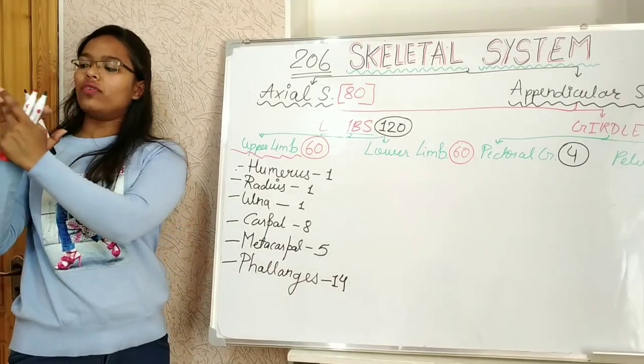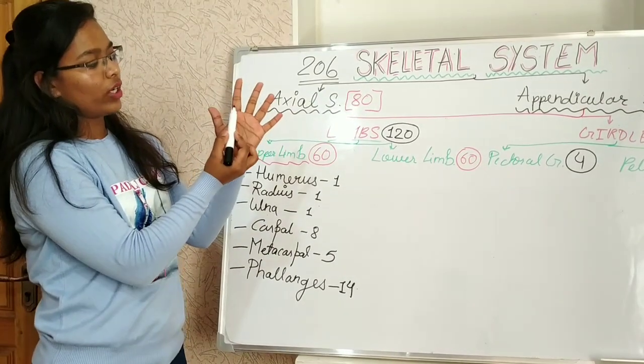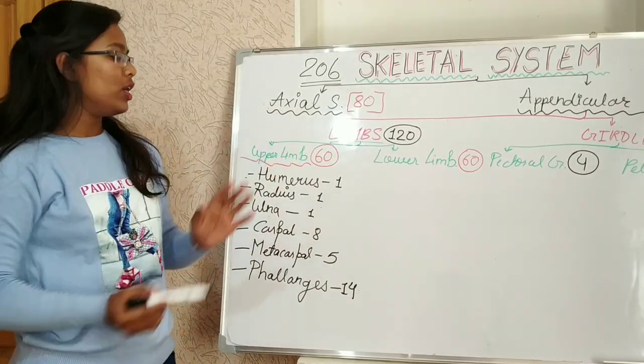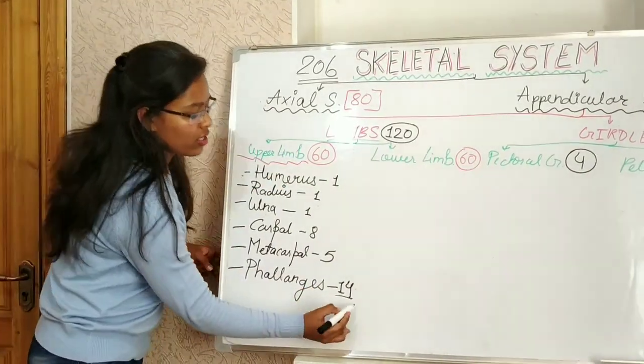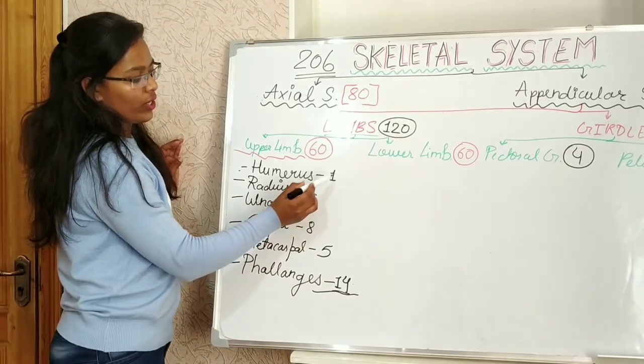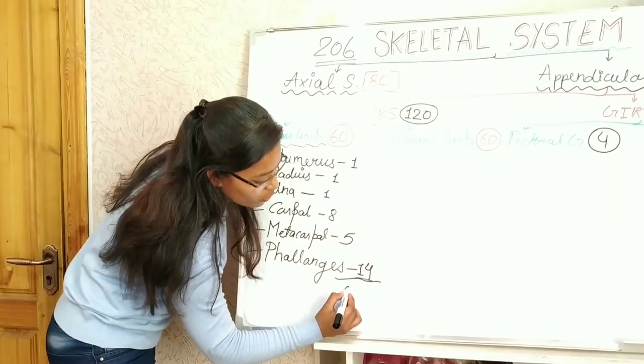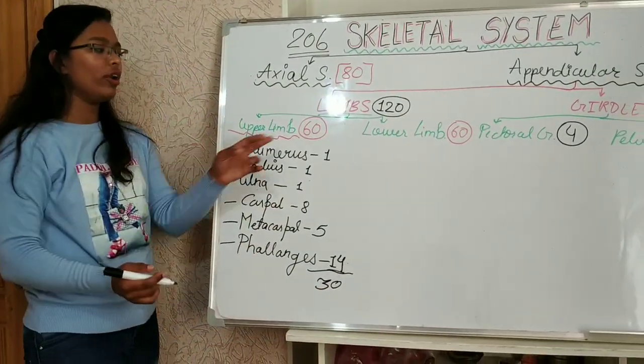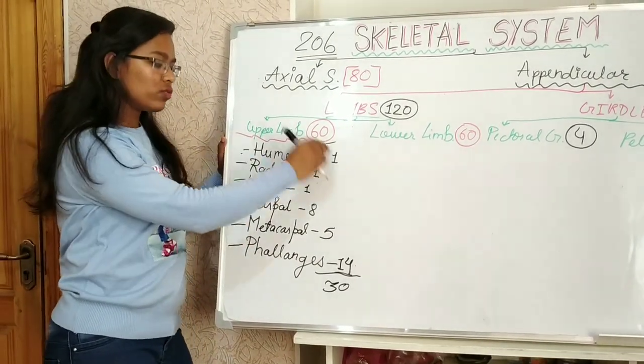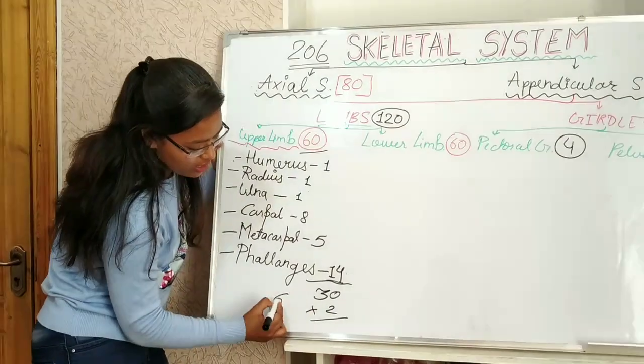Phalanges, we have total 14 bones. In each finger we have 3 bones, and in thumb we have 2. Twelve plus 2, it is 14. So total we have 14 plus 5 is 19, 20, 21, 22, and 8, 30 bones. Total 30 bones. But we want 60 bones. So this was for the one hand and we have 2 hands. So multiply by 2, total 60 bones.